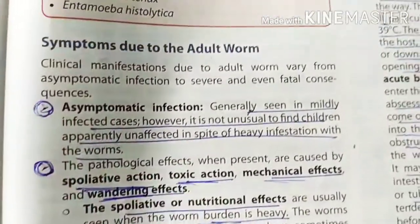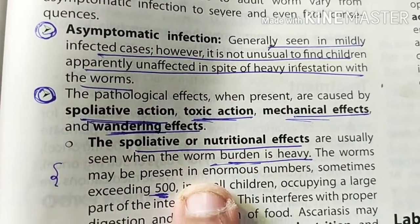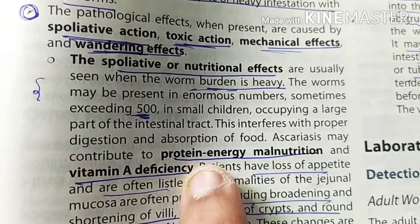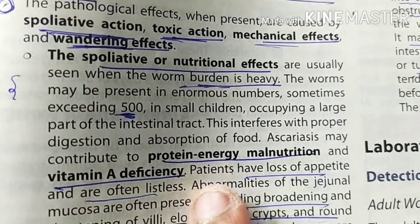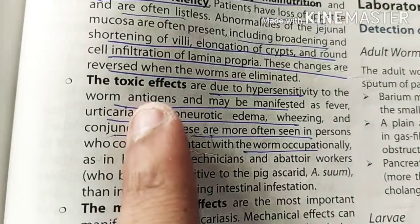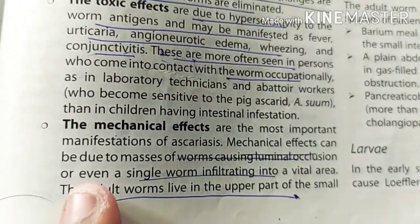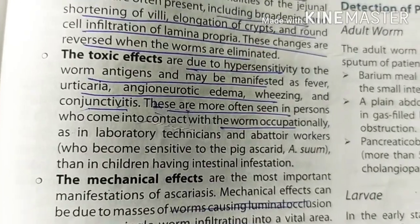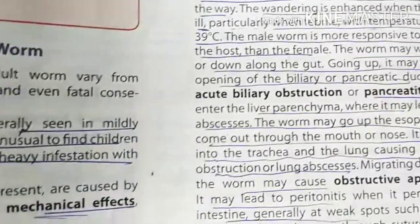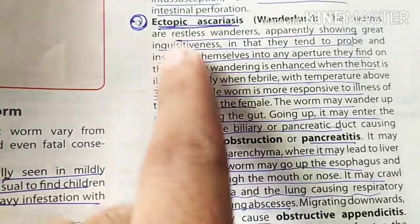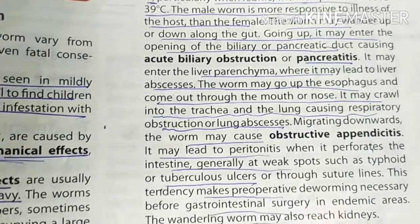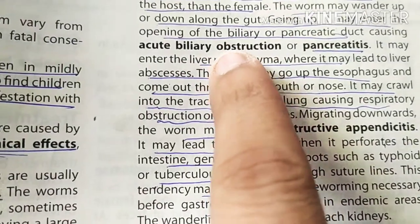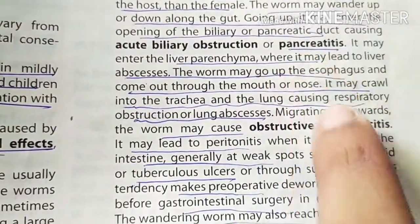The adult worm causes several symptoms. Nutritionally, it takes away all nutrition from your body, causing protein energy malnutrition and vitamin A deficiency. It also produces toxic effects like fever and mechanical effects such as intestinal obstruction and perforation. It is also a wandering worm that moves up and down the digestive tract, causing obstructive appendicitis, biliary tract obstruction, and pancreatitis.